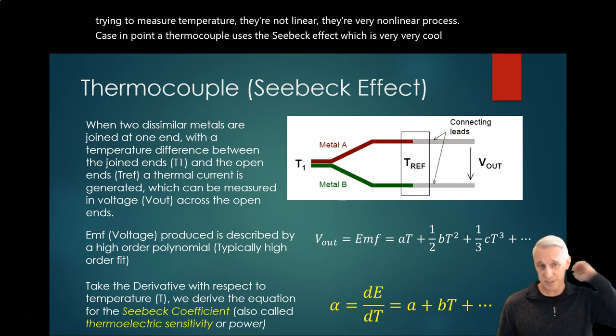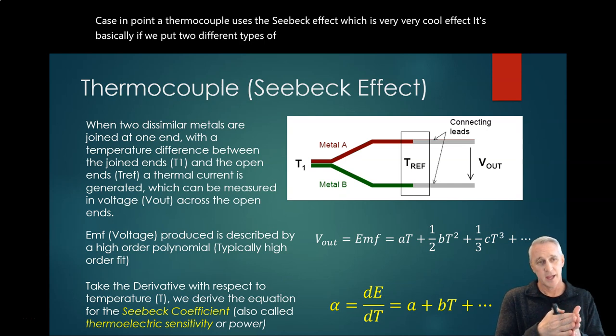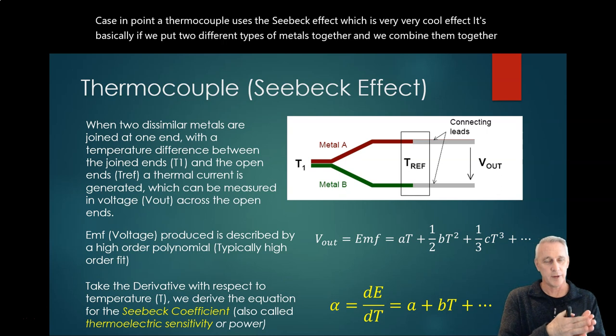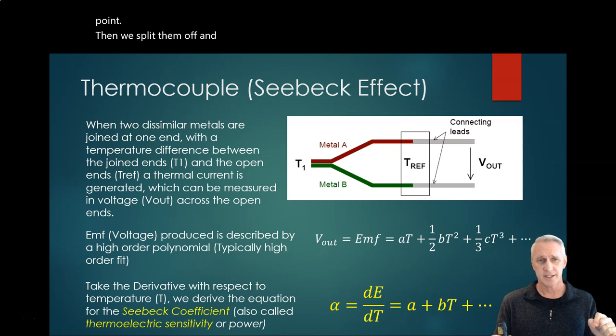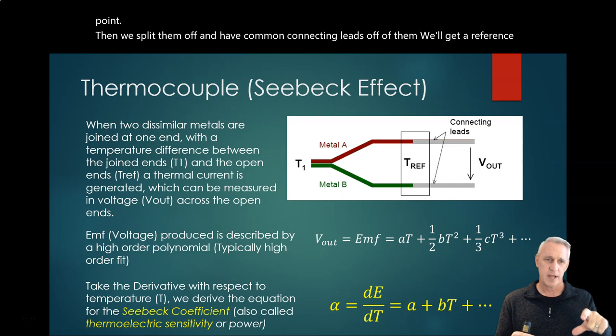Basically, if we put two different types of metals together and combine them at T1 at one point, then split them off and have common connecting leads off of them, we'll get a reference temperature that we have to have.